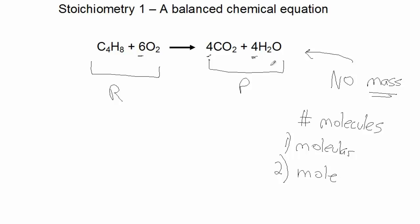Now remember a mole, one mole is 6.02 times 10 to the 23rd. That's what one mole is. So I'll read it again. When I say one mole of C4H8 I really mean 6.02 times 10 to the 23rd molecules. C4H8 reacts with six moles of O2, which is really 36.12 times 10 to the 23rd O2 molecules.